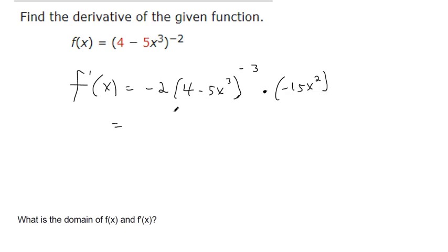Cleaning that up a bit, negative two times negative fifteen is going to give me thirty x squared. And then I'll move this to the denominator to make the power positive, so that's all to the third power.